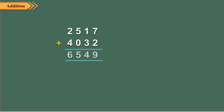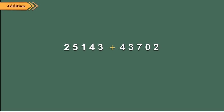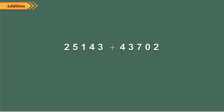In the previous class, we have learnt how to add 4-digit numbers. Let us see how to add 5-digit numbers. Adding larger numbers is just like adding the smaller ones. Let us add 25143 and 43702.